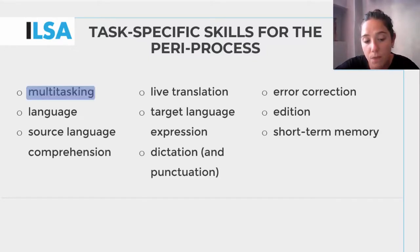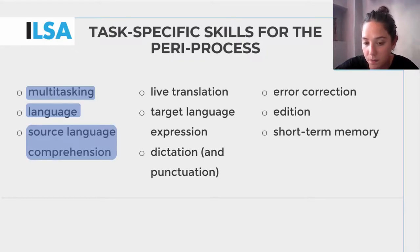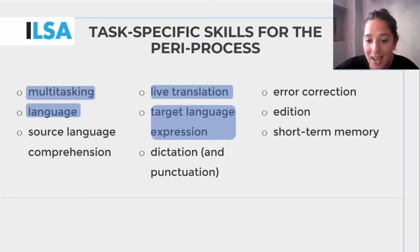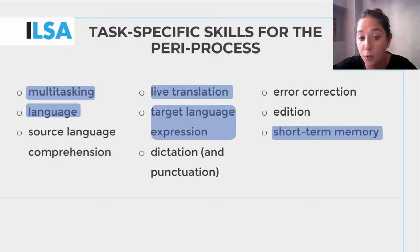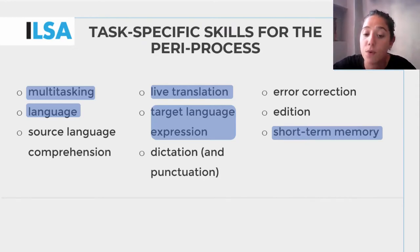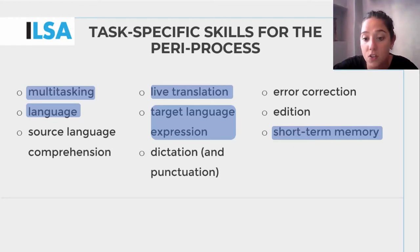In the first stage, the respeaker receives the audio input of the source text in one language — language A — comprehends it and reformulates it. At a cognitive level, the respeaker translates the input in language A into an output in language B, just as we have seen for simultaneous interpreters, while still listening to the next audio input. Split attention is of great importance in the PERI process, as respeakers need to be able to keep listening to new information while performing other tasks, such as translating the message into another language and dictating it to the speech recognition software.